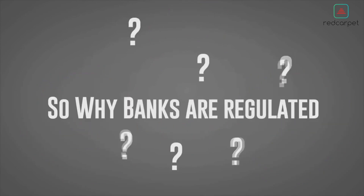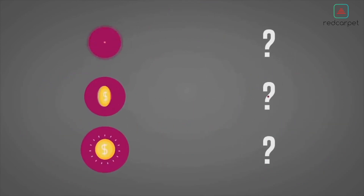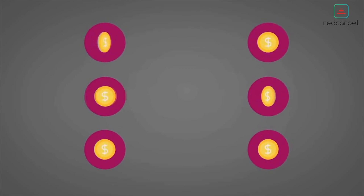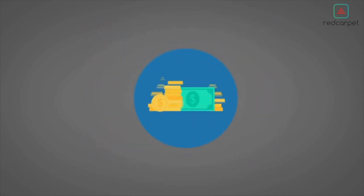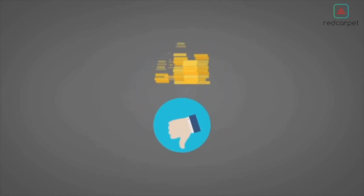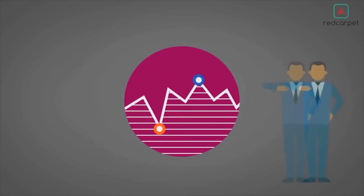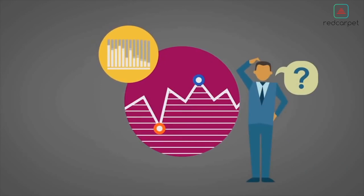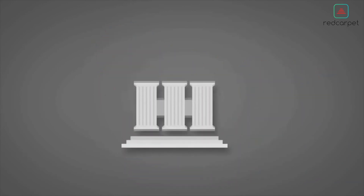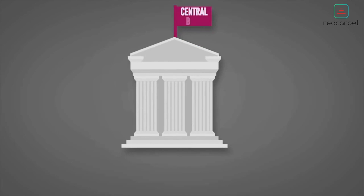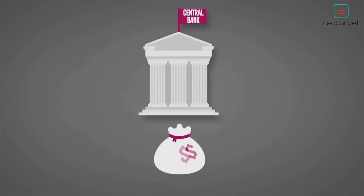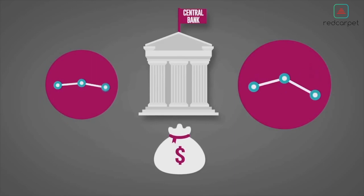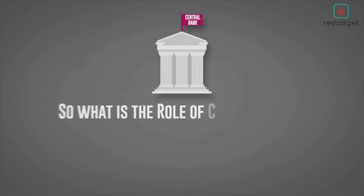Why are banks regulated? Banks collect funds from depositors as small deposits and repackage them into larger loans. Borrowers may not always be able to repay, and banks sometimes invest deposits in risky assets. These reasons explain the major role of central banks in protecting depositors' money by monitoring the level of risk the bank is taking.